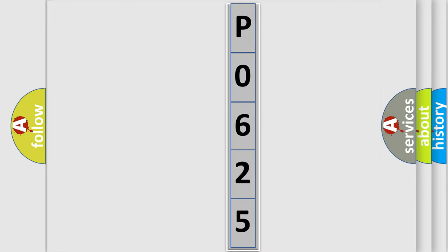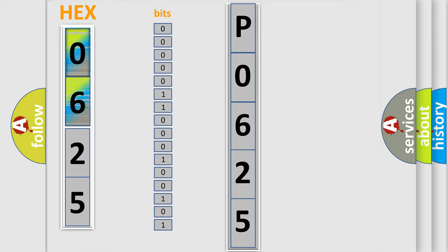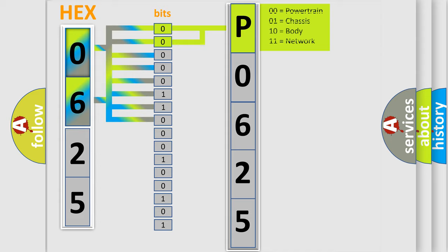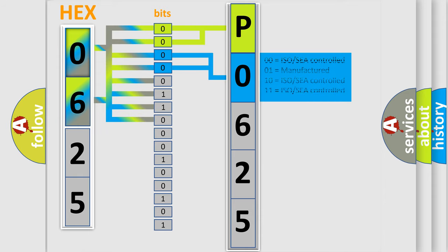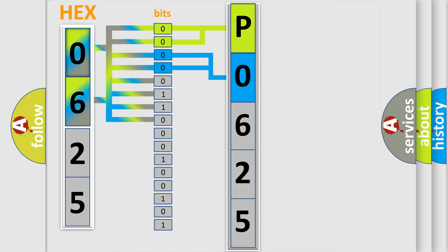The error code is split into two bytes consisting of 16 bits. One bit is the basic unit that each computer works with. The bit has two logical states: 0, low level, and 1, high level. By combining the first two bits, the basic character of the error code is expressed. The next two bits determine the second character. The last four bits of the first byte define the third character of the code.